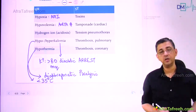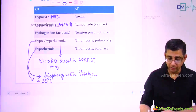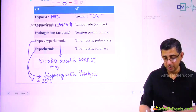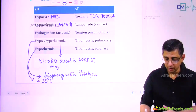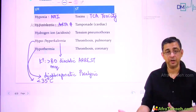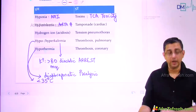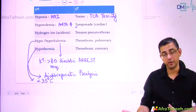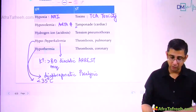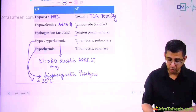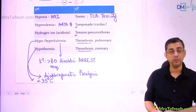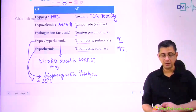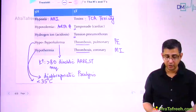Then the 5T's: Toxins — like tricyclic antidepressant (TCA) toxicity from a suicide attempt or drug overdose. Cardiac tamponade — where venous return is compromised, input is less, output is less. Tension pneumothorax — same mechanism. Then two thromboses: pulmonary embolism and myocardial infarction. So basically the 5H and 5T are responsible for PEA, and understanding them is of paramount importance — because if you can identify them, you can treat.